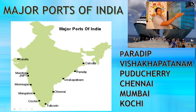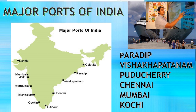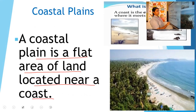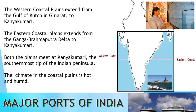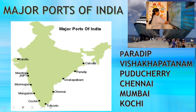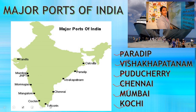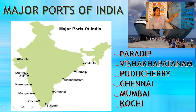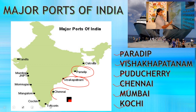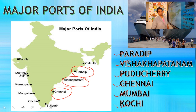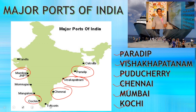The major ports are Paradeep in Orissa, Visakhapatnam in Andhra Pradesh, Puducherry in Tamil Nadu, Chennai in Tamil Nadu, Mumbai in Maharashtra, and Kochi in Kerala. Paradeep, Visakhapatnam, Puducherry, and Chennai are located in the eastern coastal plain. Mumbai and Kochi are located in the western coastal plain.